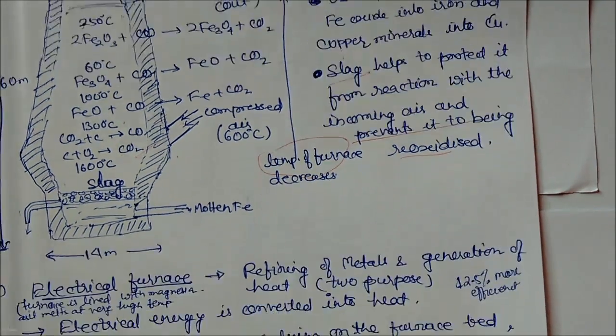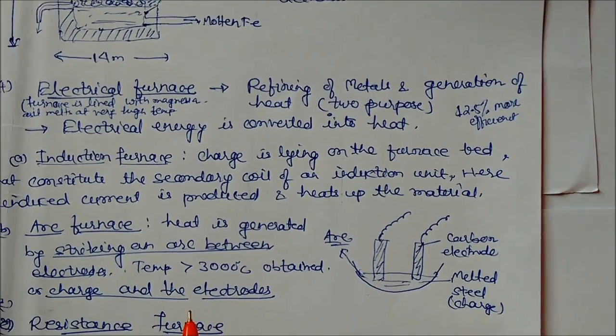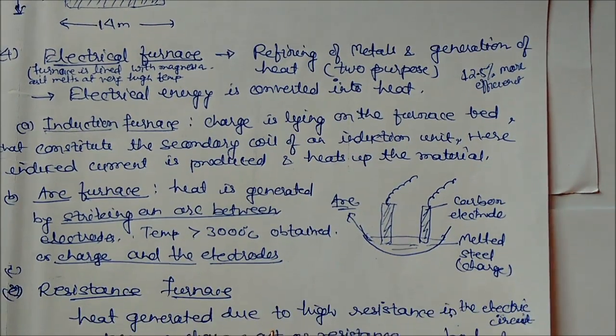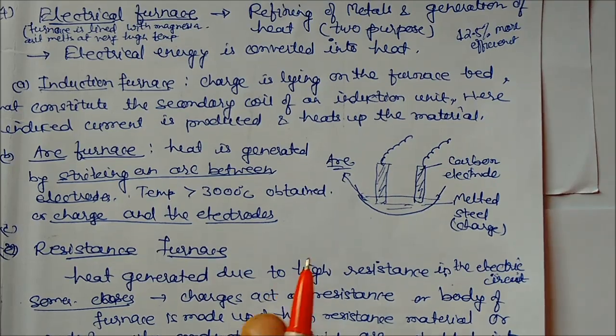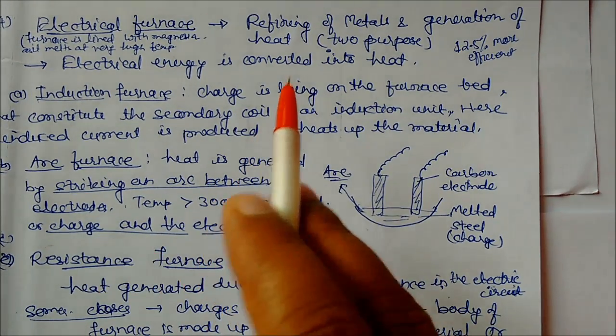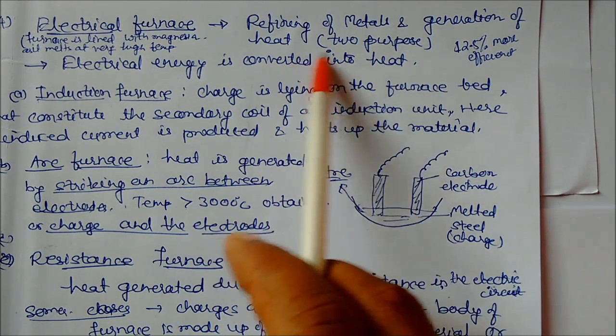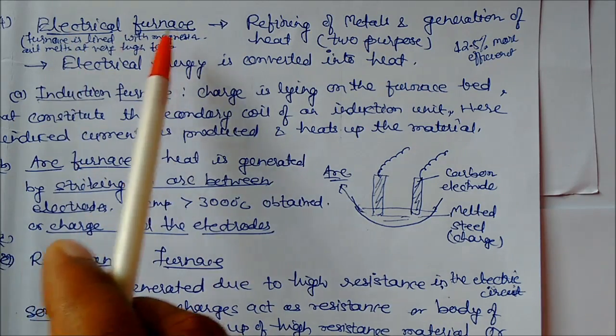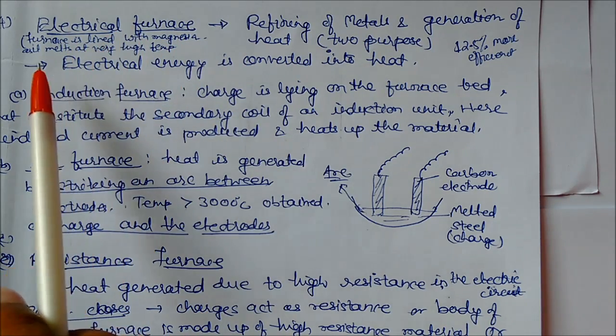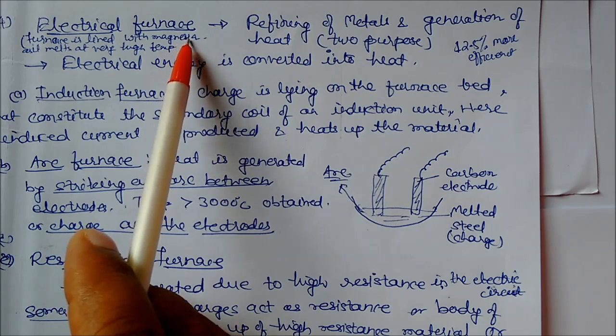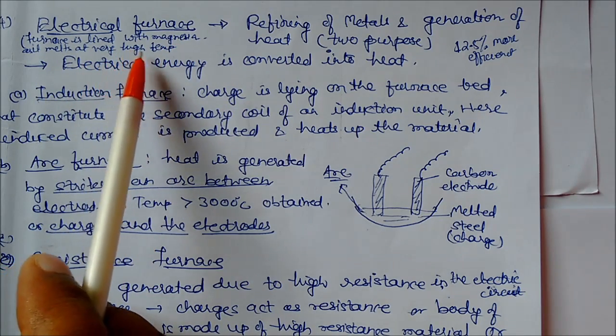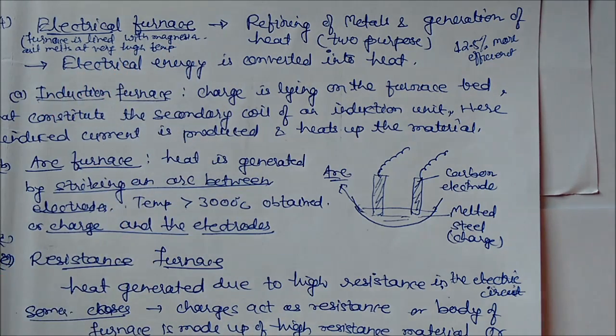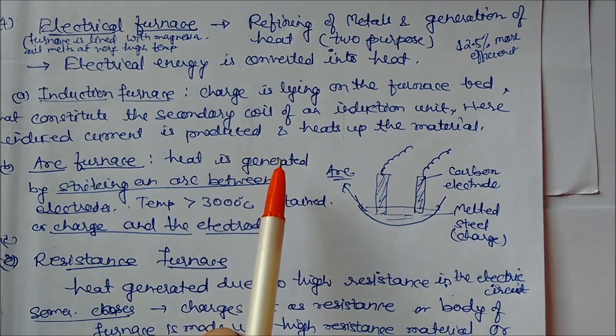Next furnace we have is electrical furnace. It is used for refining of metals and generation of heat for this purpose. This furnace is again lined with magnesia. Magnesia is a basic refractory material which can melt at very high temperature. Here electrical energy is converted into heat.